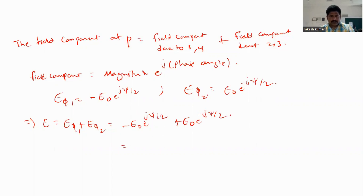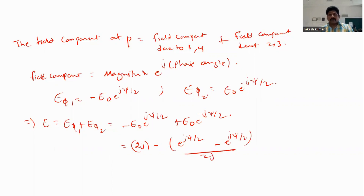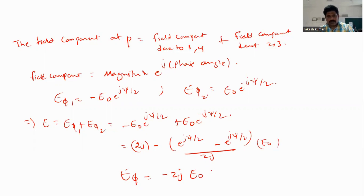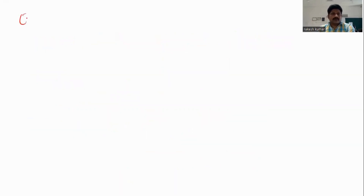Since there is a minus sign, this becomes E₀ times (e^(jψ/2) − e^(−jψ/2)), which is of the form (e^(jθ) − e^(−jθ)) / 2j. Therefore the total E_phi equals −2j·E₀·sin(ψ/2). So E_phi = 2j·E₀·sin(ψ/2), where ψ = β·d·sin(θ), giving E_phi = 2j·E₀·sin(β·d·sin(θ)/2).